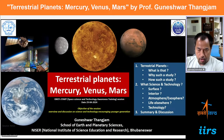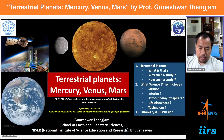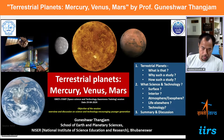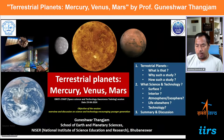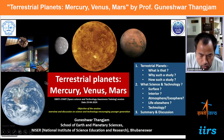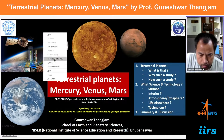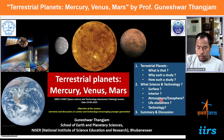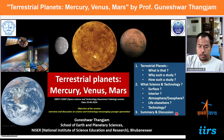The first part focuses on defining terrestrial planets — what, why, how. The second part covers the importance, applications, and implications in the overall solar system — talking about the surface, interior, their atmosphere, plasma environment, and aspects related to life elsewhere, or astrobiology. Then there's a section on technology, and finally the summary and discussion points as a takeaway message for these three planets in the context of overall planetary and space science.